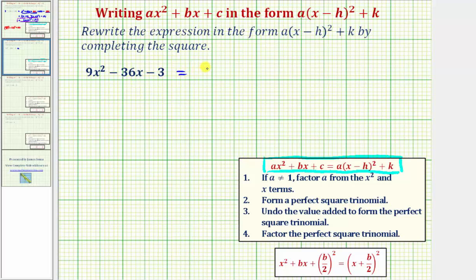So that would give us nine, and then we'd have times the quantity x² - 4x. Now the next step is to form a perfect square trinomial. So let's go ahead and leave a space here. We're going to add a constant to complete the square on the next step, and then we still have minus three.